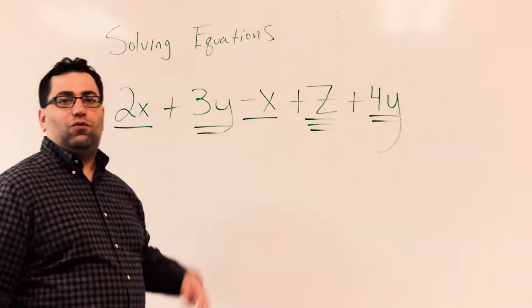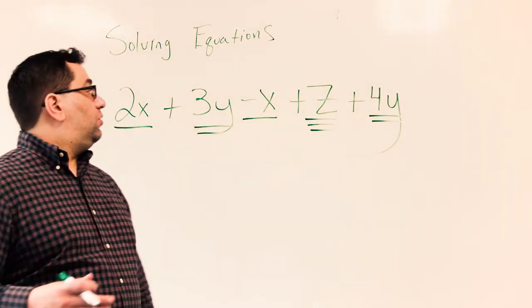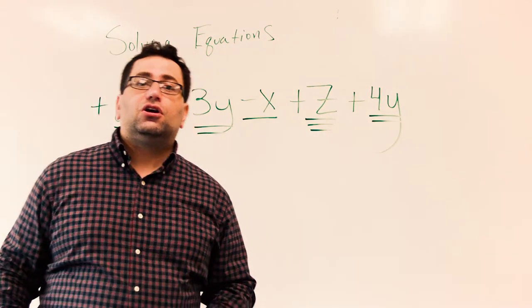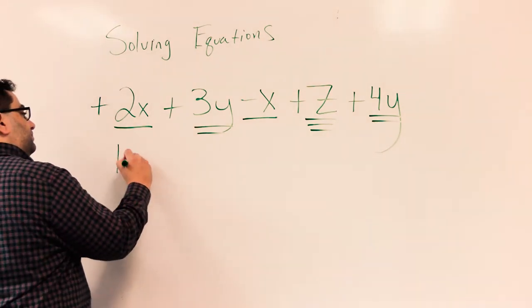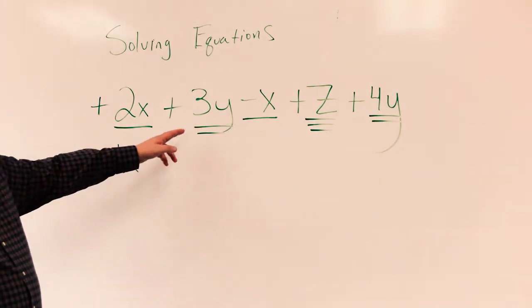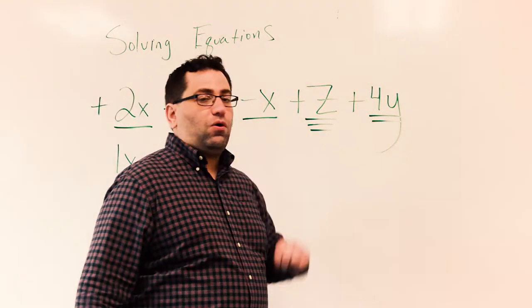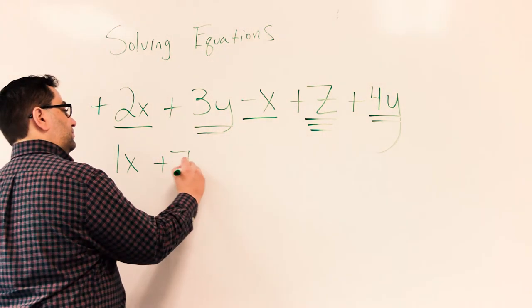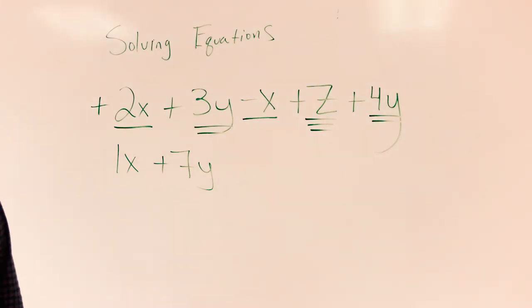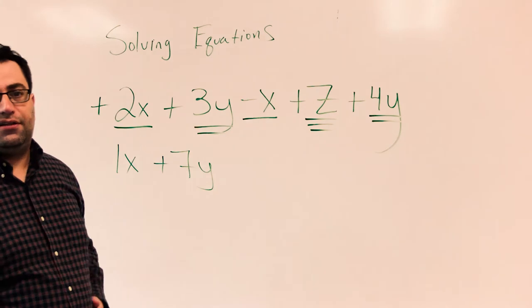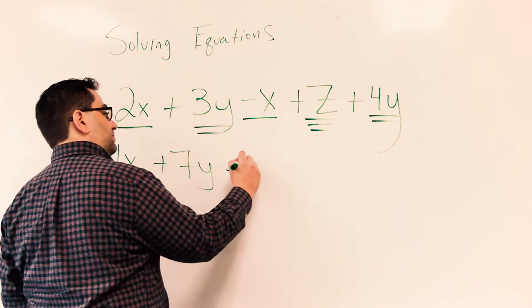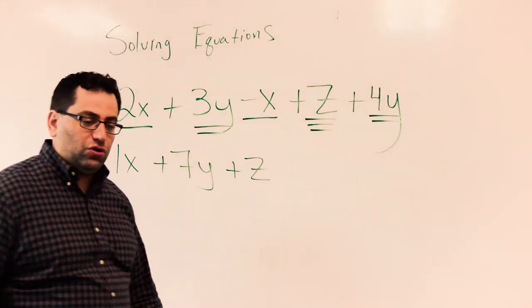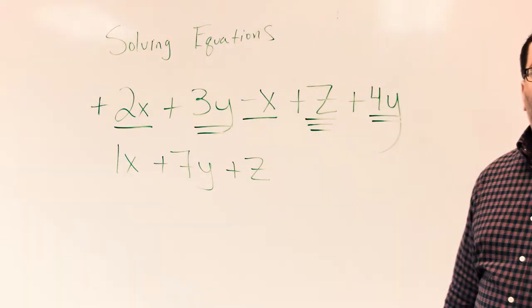We have 2x's and a negative 1x. Think back to that first video — positive 2, no sign, negative x, I'm going to subtract. 2 minus 1 is 1. I have 3 y's and 4 y's — two positives, I'm going to add. 3 plus 4 is 7. And then the z is all by himself; he doesn't have anything to combine with, so we just add him at the end. Once you have 3 separate variables and you can no longer combine an expression, you have combined like terms.